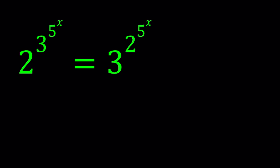So let's start by ln-ing both sides. ln is natural logarithm, so I'm just going to go ahead and ln 2 to the power 3 to the power 5 to the power x, and ln 3 to the power 2 to the power 5 to the power x.